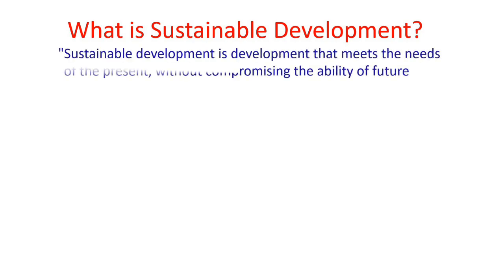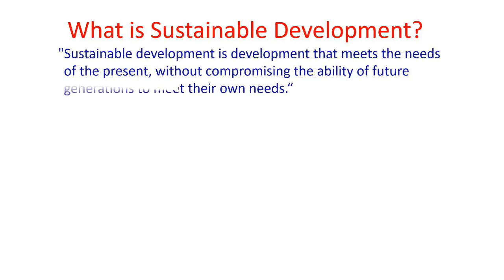First of all, what is sustainable development? It's a development that meets the needs of the present without compromising the ability of future generations to meet their own needs. We have resources in the environment and we have to use those resources wisely so that they can be preserved for our future generations. There are 17 goals which we have to achieve.